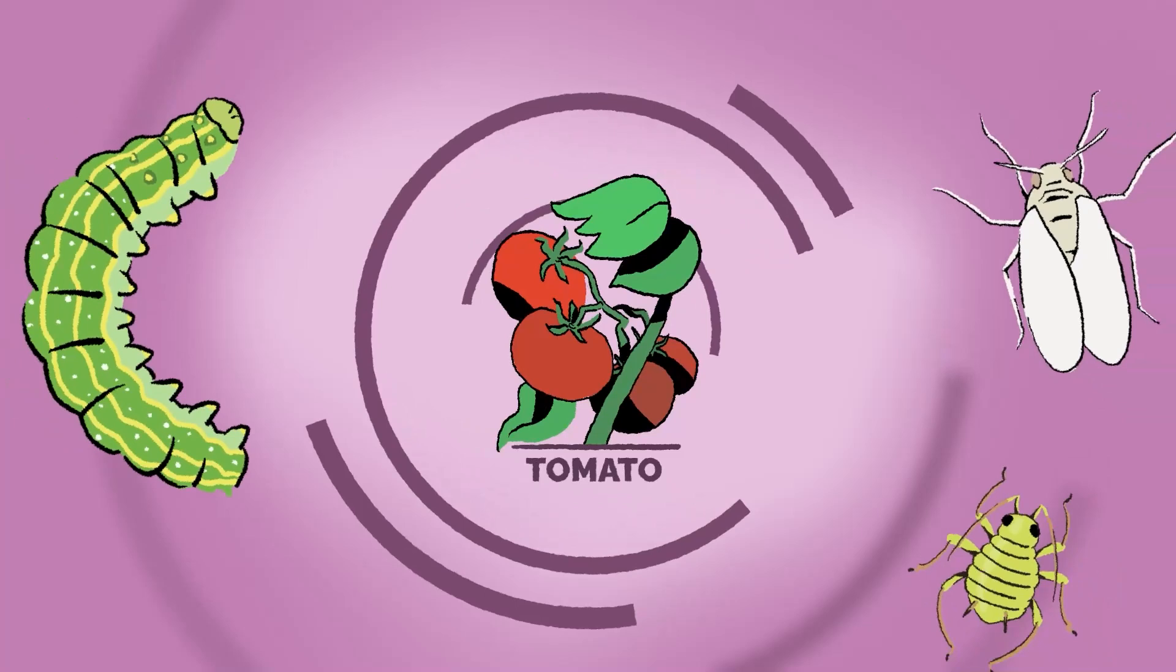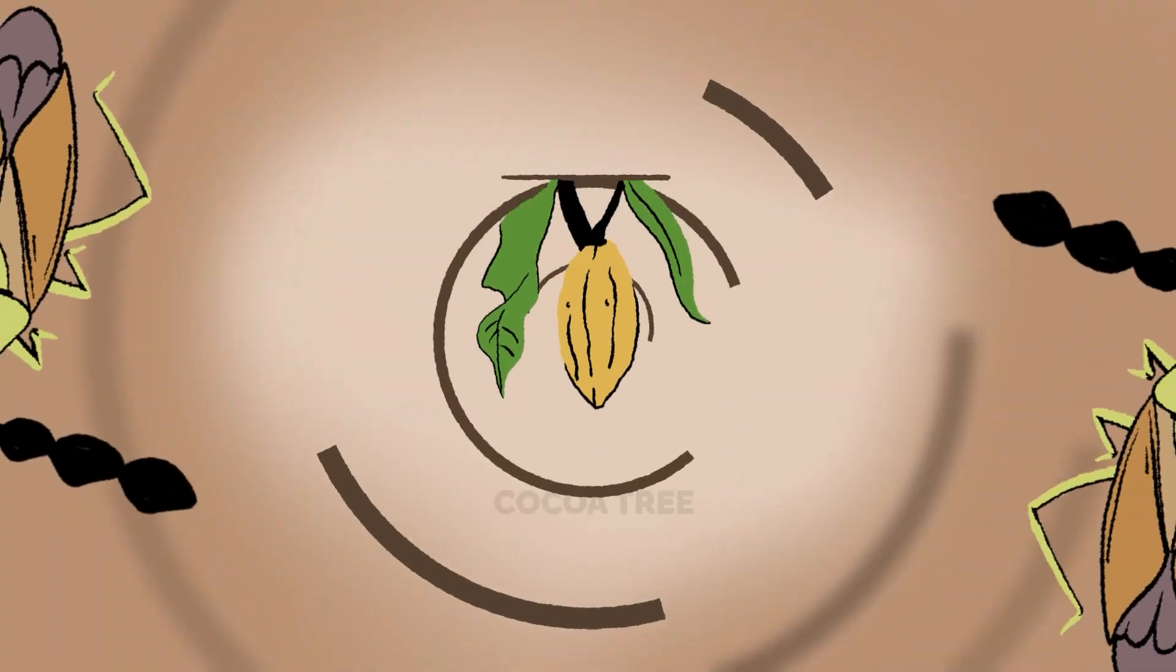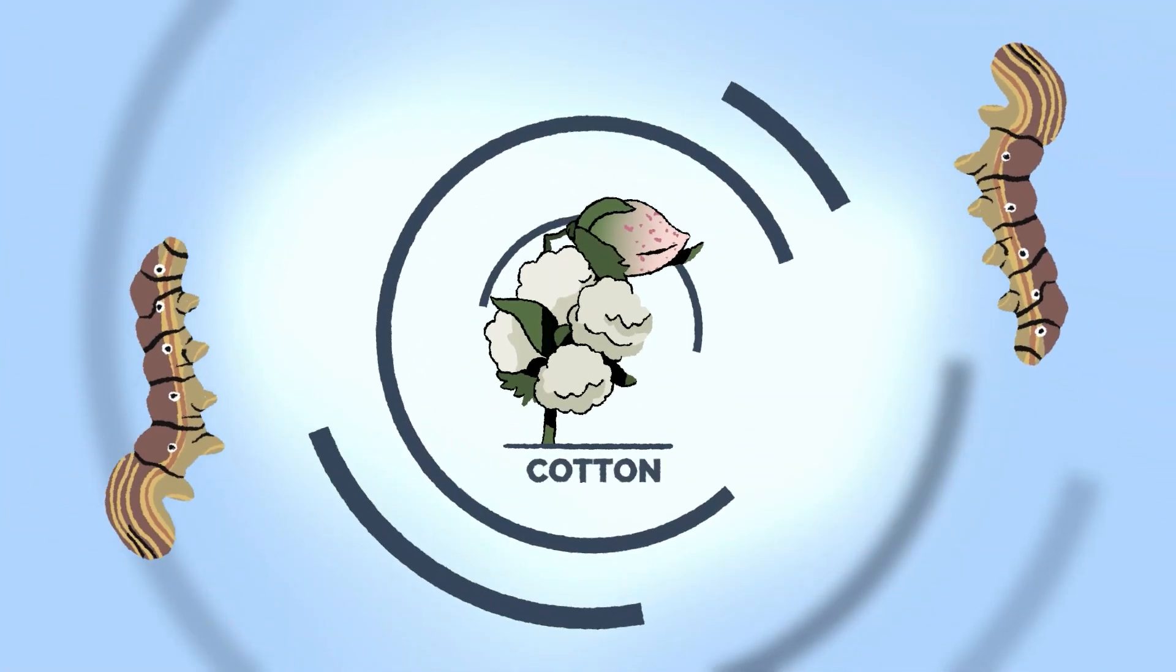Interestingly enough, alternating different crops avoids always having the same insects and therefore the same pests. In fact, a given crop has specific insects that it will attract.